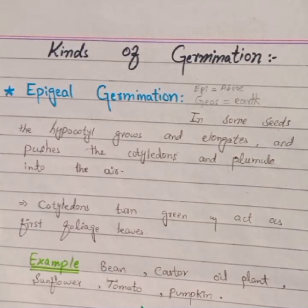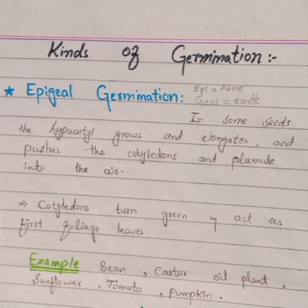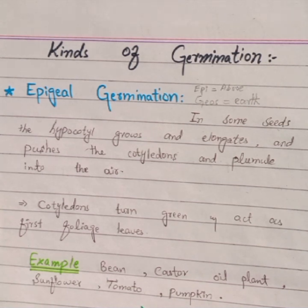Assalamu alaikum, dear students. Today's lecture is about the kinds of germination. There are two main kinds: epigeal germination and hypogeal germination. There is also an exceptional case known as viviparous germination, which is a rare kind of germination.